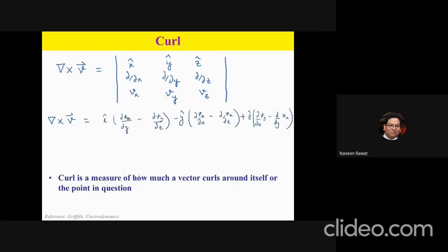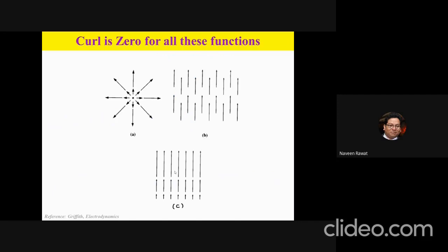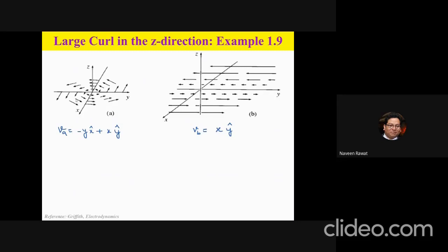The curl is a measure of how much a vector field is curling or rotating around a point. For the diverging fields shown earlier, the arrows never go around the point in question — they keep diverging — so the curl is zero for all three of those cases. However, if the field rotates around a point, such as in the x-y plane, the resulting curl points in the z direction.